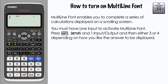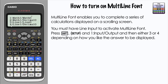To set up line display, press Shift, Setup, and 1 for Input/Output. Then you can choose option 3 or 4 depending on the sort of result you want — primarily regarding fractions — whether you want fractions displayed on one line or a decimal result when you press equals. I'm going to go for 3 to get the fraction result on one line.